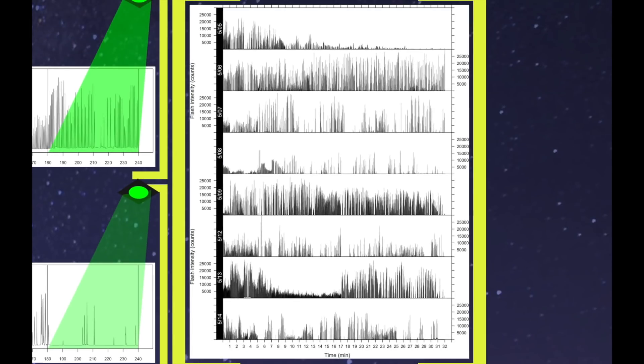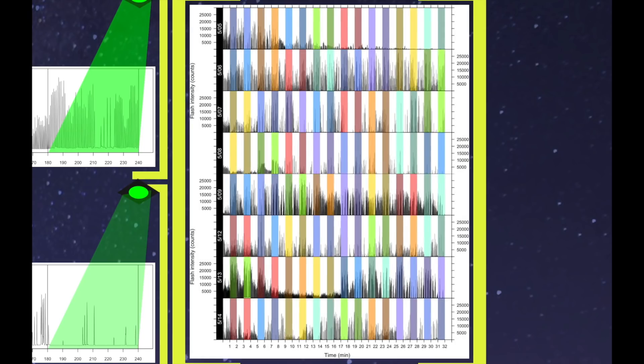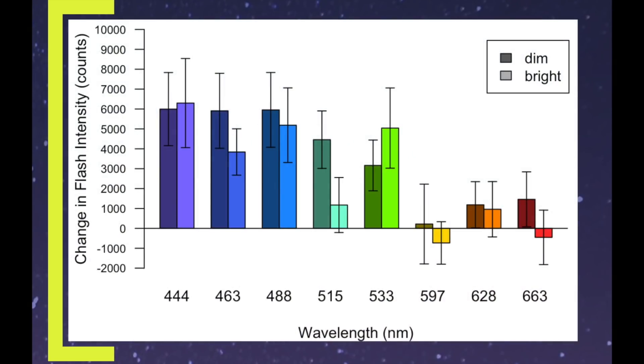So we took recordings from eight different males on eight different evenings. And each recording was 32 minutes, during which we exposed them to all eight colors of light, two brightnesses each in a random order. And then we dropped the first and the seventh recording, because they were super weird. So then we're left with six recordings, which we take the data from this, shuffle it around, rearrange it, do some analyses, and we get a nice graph like this.